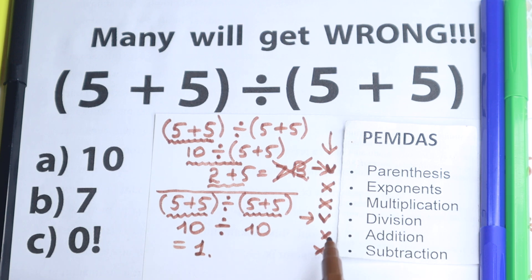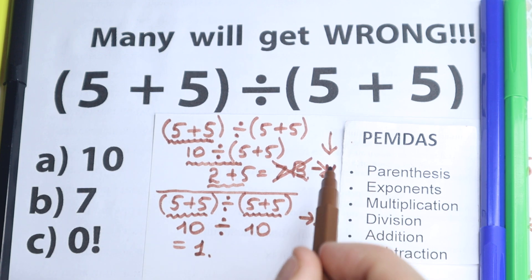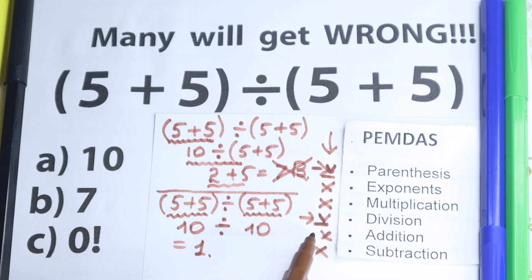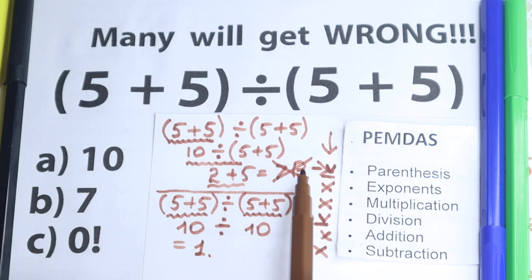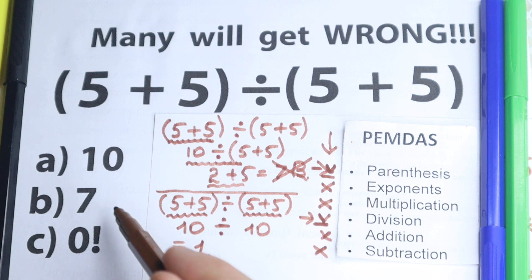I want to mention a really important rule. As you can see, we have only two steps here — division and parentheses. And as I said, parentheses come before division. So all the time you need to start from the parentheses — all the time. Parentheses, then division; or parentheses, then multiplication; or parentheses, then addition. This is a really important rule. Let's go back to this question because we need to choose one correct letter.